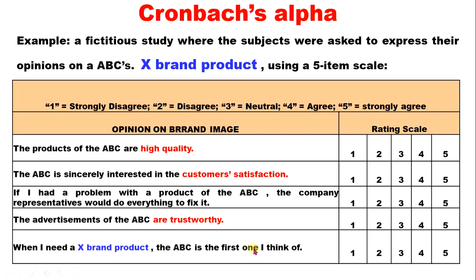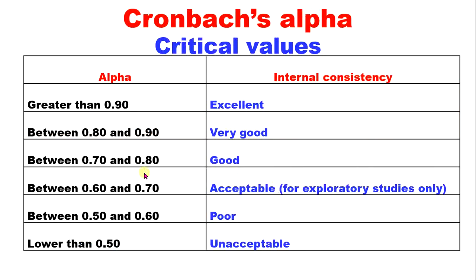When I need a brand product, ABC is my first choice. Now, the procedure involves a critical value. If the alpha is greater than 0.9, that is excellent — the internal consistency of your data collection instrument is excellent.